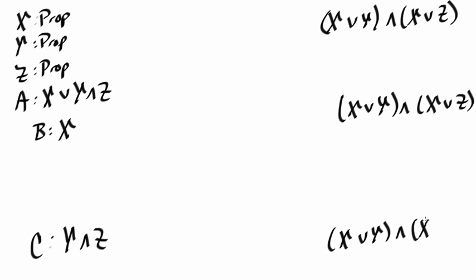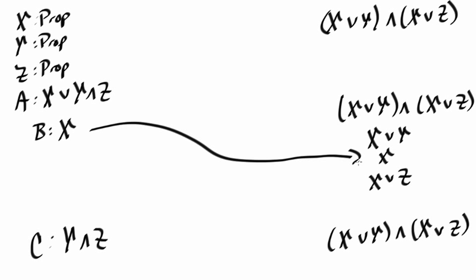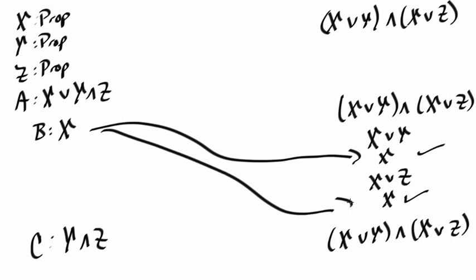So we have two subgoals. Let's work on the first subgoal first. We need to prove a conjunction, so that means we need to prove both conjuncts, which splits us into two more subcases. In the first subcase we need to prove x or y, and in the second we need to prove x or z. It's clear that we can prove x or y by proving x, which we have because of b. So this one's done. The second case is the same — we prove x using assumption b, and we're done.